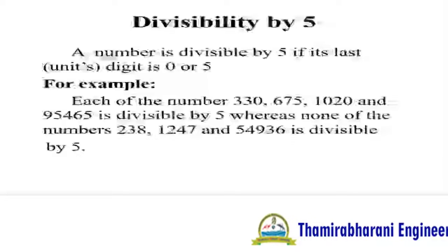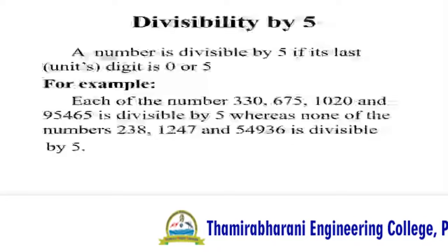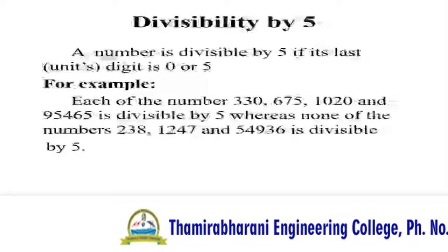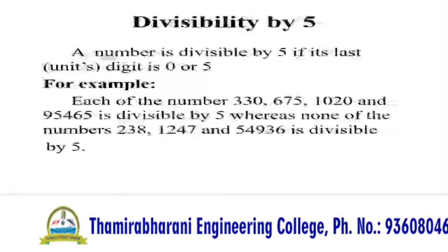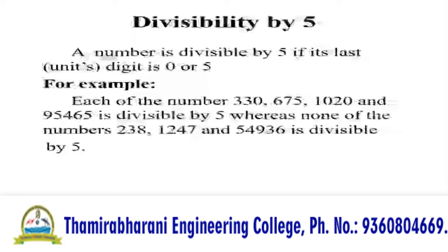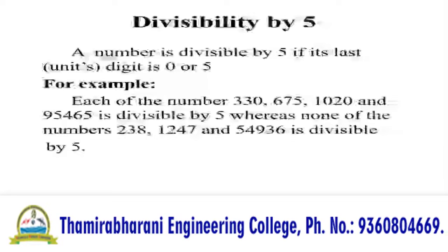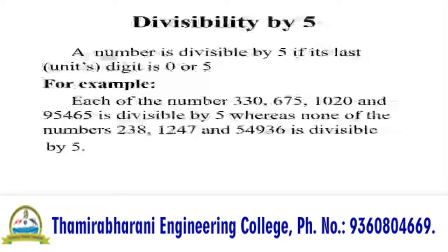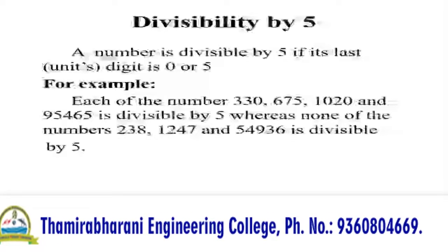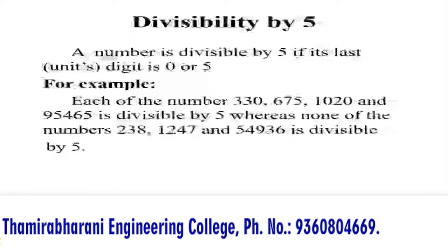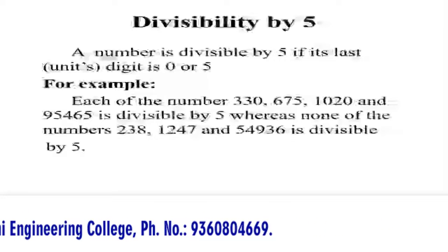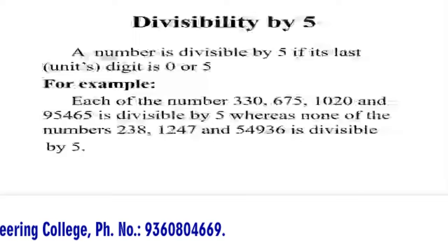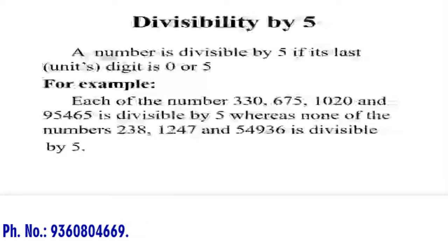For example, each of the numbers 330, 675, 1020, and 95,465 is divisible by 5. Whereas none of the numbers 238, 247, and 54,936 is divisible by 5.